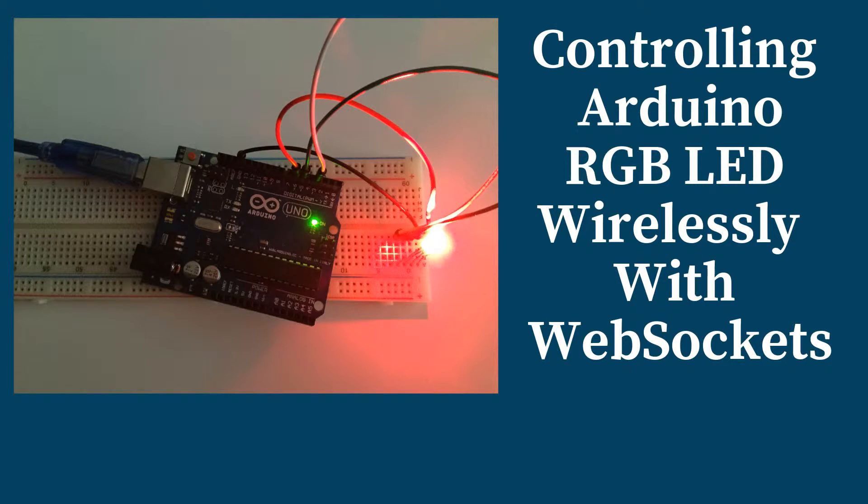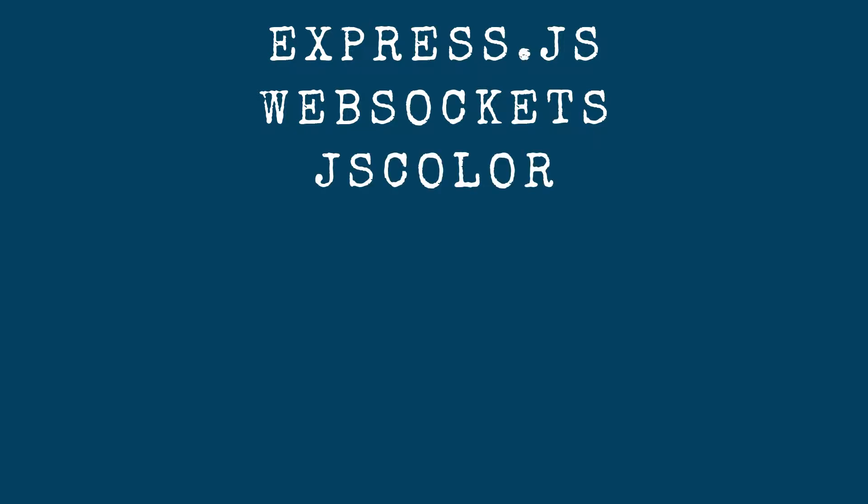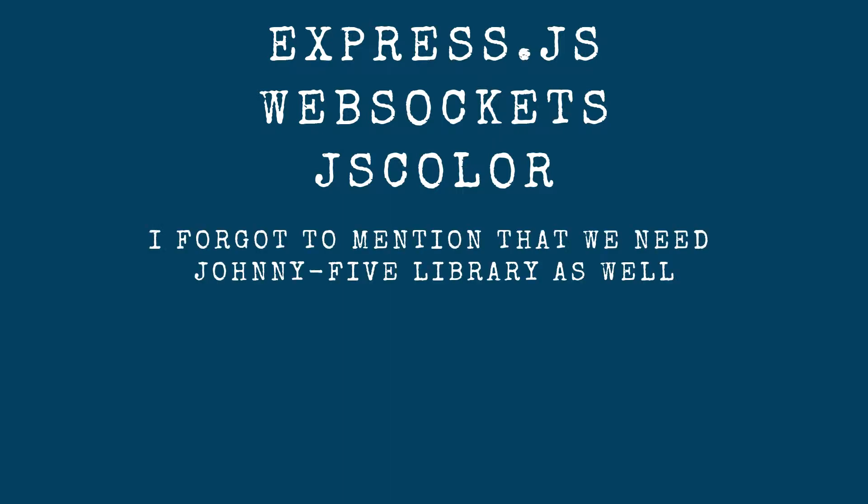In order to accomplish what we're going to be doing today, we're going to be using a couple of things. First, we're going to be using ExpressJS — a framework for Node.js that allows us to easily create web and mobile applications and APIs. We're also going to be using WebSockets, which is a communication protocol over a single TCP connection that enables real-time interaction between a browser and a server. And third, we're going to be using a JS library called JSColor, which will help us create the color picker you saw at the beginning of the video.